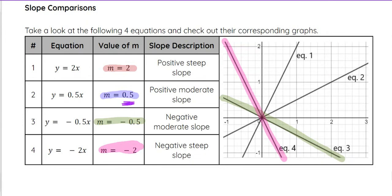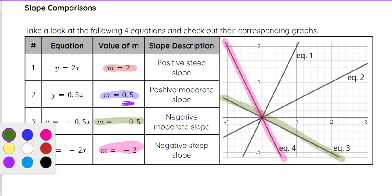The same goes for positive — the more positive you go. If you think about a number line with one half and two, two is further into the positive side of the number line, so it's going to be steeper than a number that's not as far into that number line.